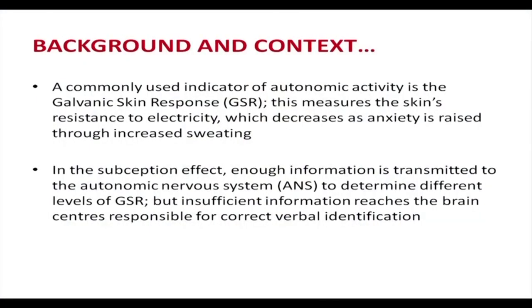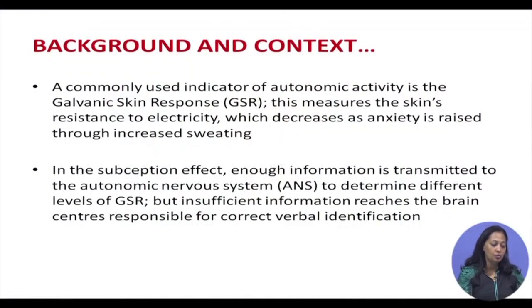McGuinness planned to use this. In what is called the subception effect, a stimulus creates awareness just below the conscious level. Enough information is transmitted to the autonomic nervous system to determine different levels of GSR — so there is a physical awareness of the stimulus but not a conscious awareness. The body is aware of the stimulus and a triggering response has occurred, but there is no verbal identification; the individual is not verbally aware of the stimulus.